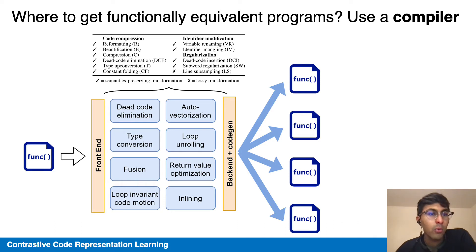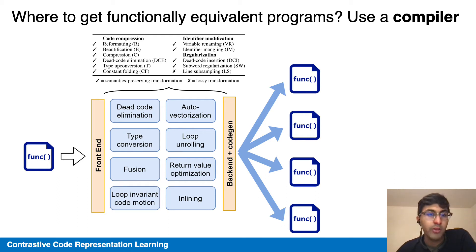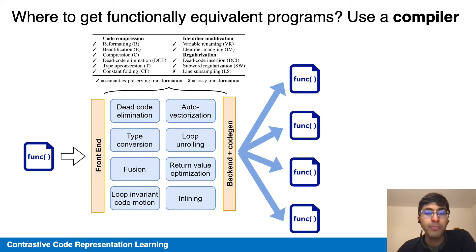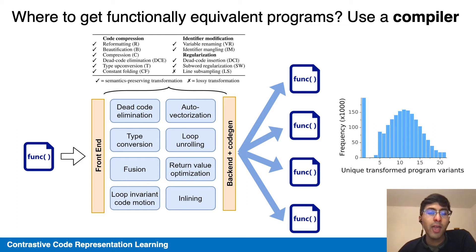We implement a variety of different code transformations, such as dead code elimination, type conversion, identifier modifications like variable renaming, and regularization passes like changing the tokenization scheme. These are versatile and diverse, resulting in quite a lot of variety on the dataset of GitHub programs.